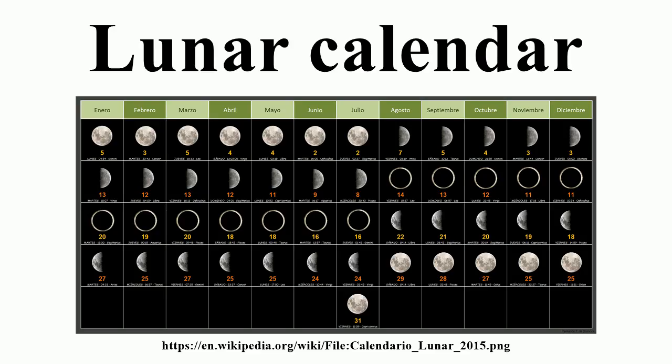Most calendars referred to as lunar calendars are in fact lunisolar calendars. That is, months reflect the lunar cycle, but then intercalary months are added to bring the calendar year into synchronization with the solar year. Some examples are the Chinese and Hindu calendars.